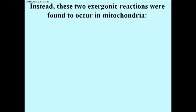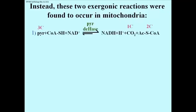The Krebs cycle occurs in the mitochondrion, which means pyruvate has to get into the mitochondrion. The enzyme that would be predicted by Krebs' super catalyst notion for oxidizing pyruvic acid was never found, despite a lot of searching.